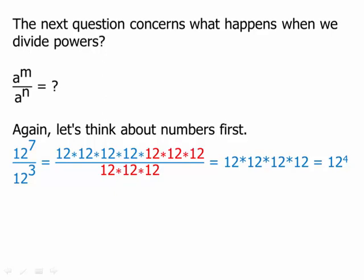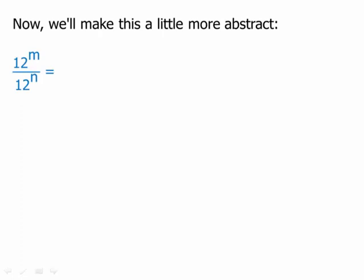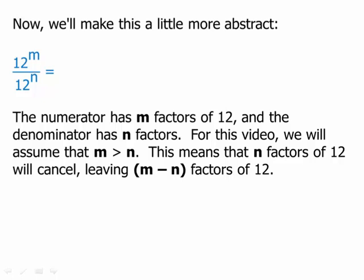We'll make this a little more abstract. Twelve to the m over twelve to the n. In the numerator of the fraction we have m factors of twelve, and in the denominator we have n factors of twelve. We're going to assume that m is greater than n, at least in this video. This means that n factors of twelve will cancel — all the factors in the denominator cancel — and that will remove some of the factors from the numerator. What will be left in the numerator after removing those n factors will be m minus n factors of twelve. So we're left with twelve to the m minus n.